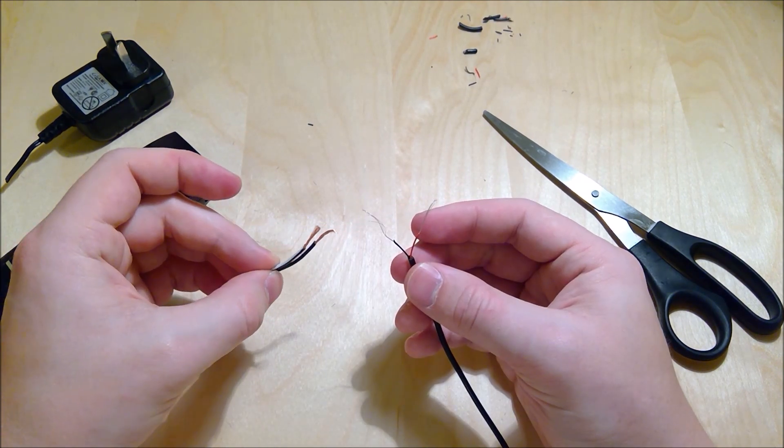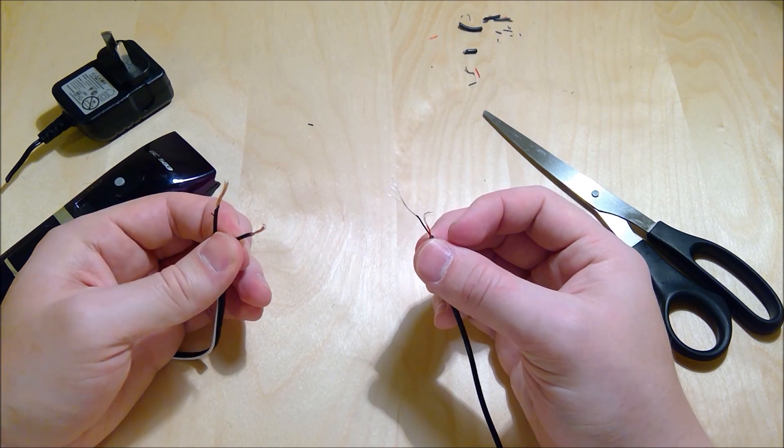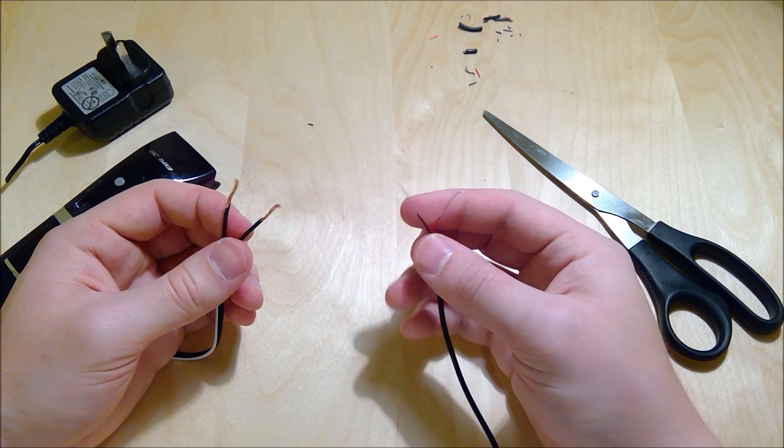Again, the one with the white stripe is the positive, which is going to go to the red of this one. And the black one is negative, which will go to the black of this one.